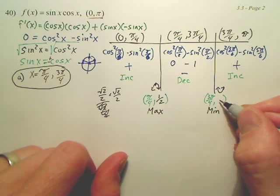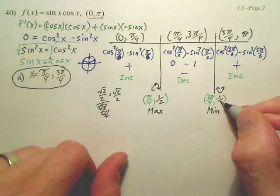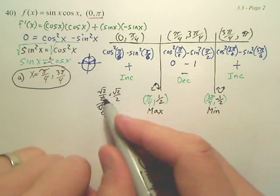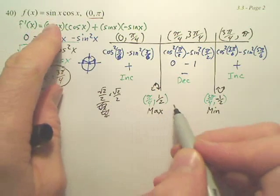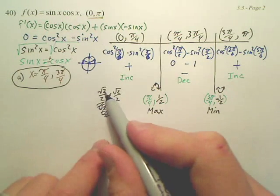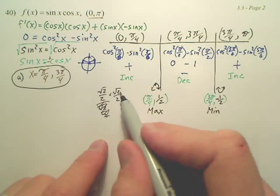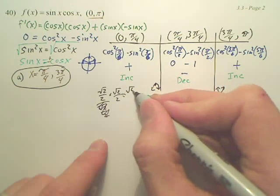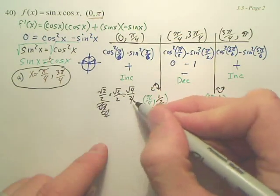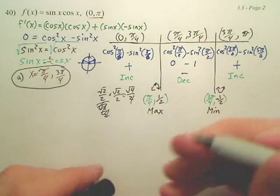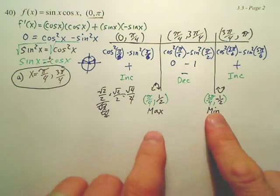And this one's the same thing. Would it be negative 1 half? Yeah. Thank you. Yeah, you're going to multiply. When you plug in π/4 to both of these, you've got square root of 2 over 2, square root of 2 over 2. That's square root of 4 over 2 over 4, which is 2 of 4, which is 1 half. Thank you, guys. So, min, max.